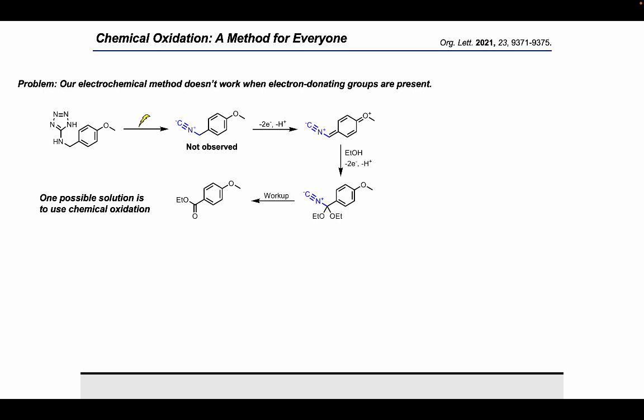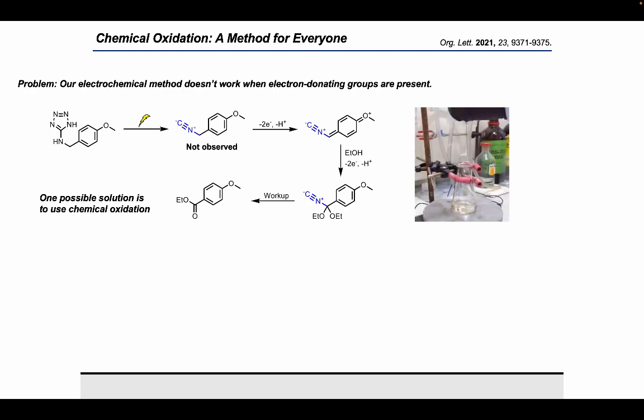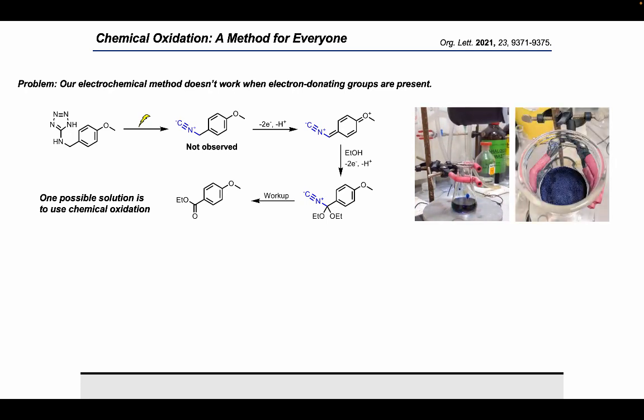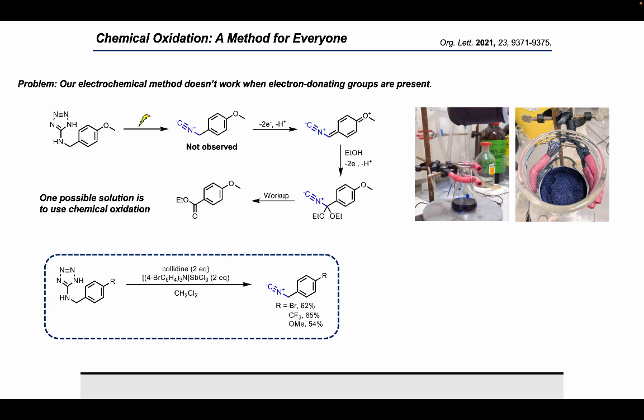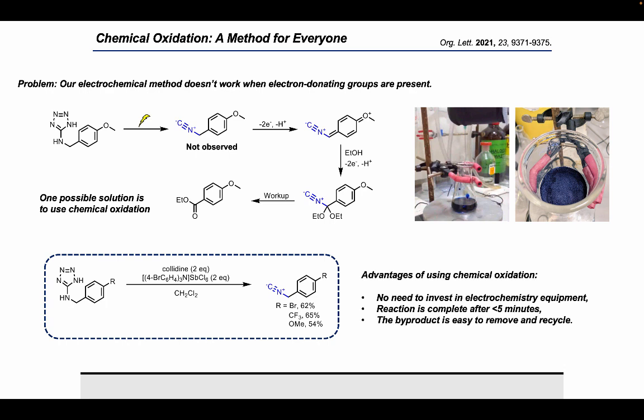Now, one possible solution to this is to use chemical rather than electrochemical oxidation, but then we need a chemical oxidizing agent. The one we chose to use is magic blue, which, as you can see in this video here, is called so because of its deep blue color. And what we found is actually we can take some of our tetrazole in the presence of collidine and two equivalents of magic blue in dichloromethane, and we can afford our desired isocyanides in good yields. And the advantages of using chemical oxidation is there's no need to invest in electrochemistry equipment. The reaction is actually complete after less than five minutes. And what I actually quite like about this is the byproduct is very easy to remove and recycle back into the oxidizing agent.